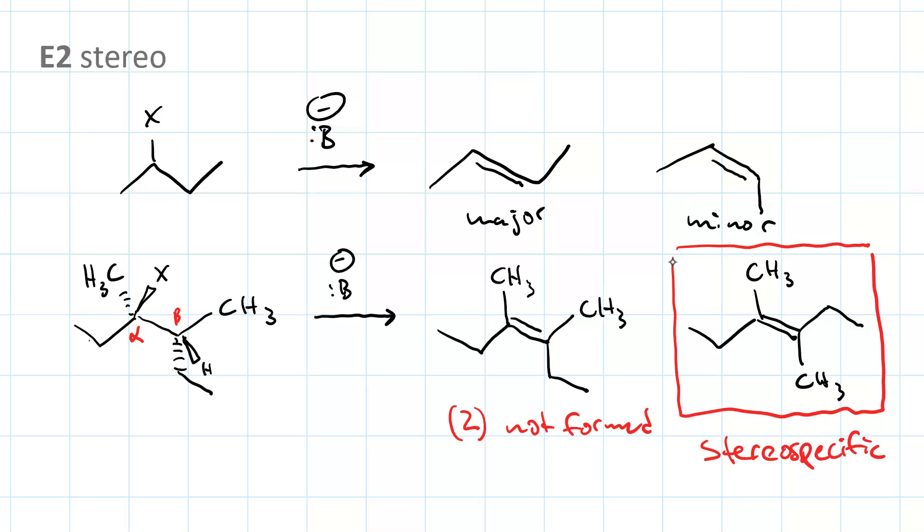But the E isomer is formed exclusively. And this is not to say that it's always Z or always E. It's one or the other, depending on whichever one goes through the anti-periplanar beta proton rotational configuration. So to determine which of these isomers is formed, you rotate the beta carbon 120 degrees in one direction to make the beta proton 180 degrees from the leaving group. This can be easily done using Newman projections.